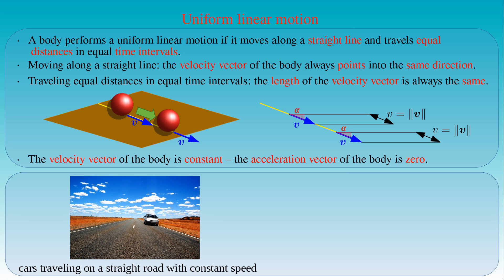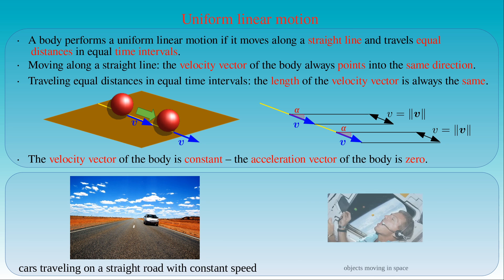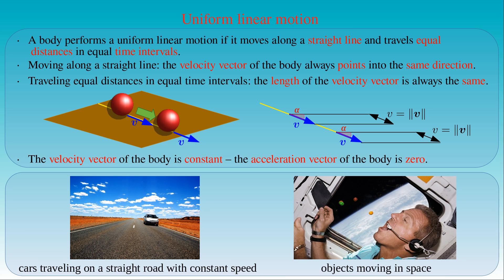However, if we leave our everyday environment on Earth and study the motion of objects in space, we see that uniform linear motion is a natural state of bodies. When an astronaut pushes a small object in space, the body moves with a constant speed along a straight line until it collides with the wall of the spacecraft.